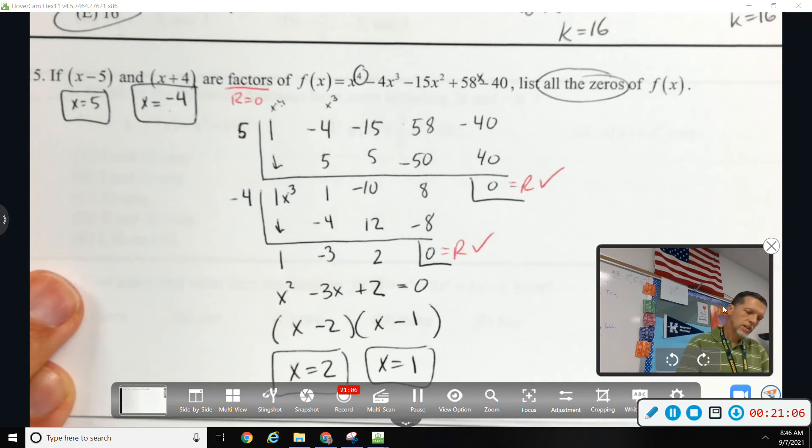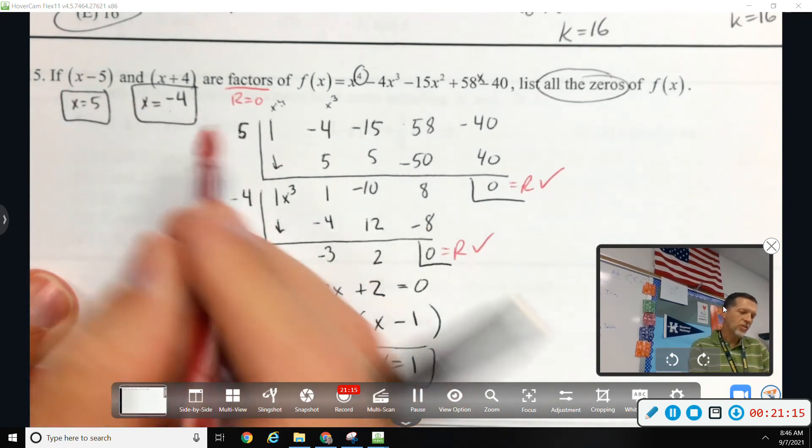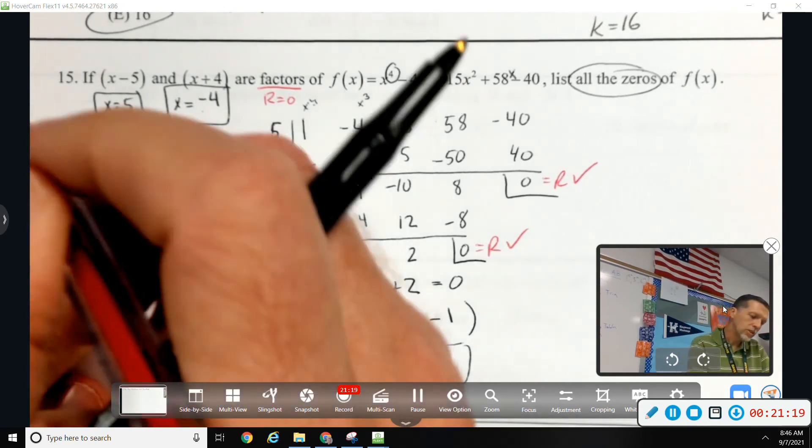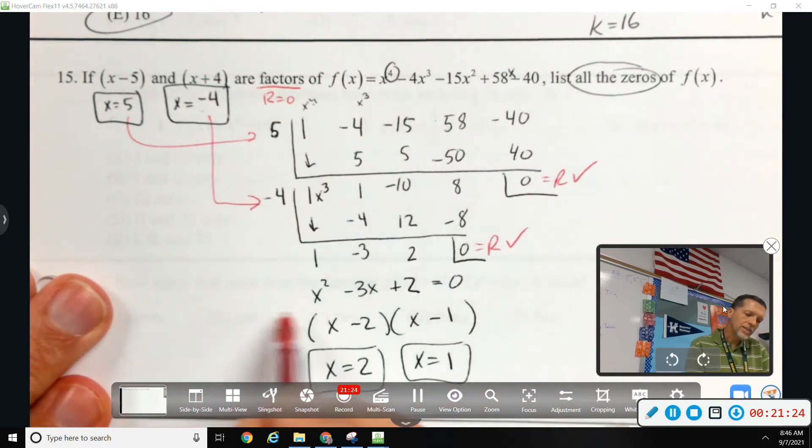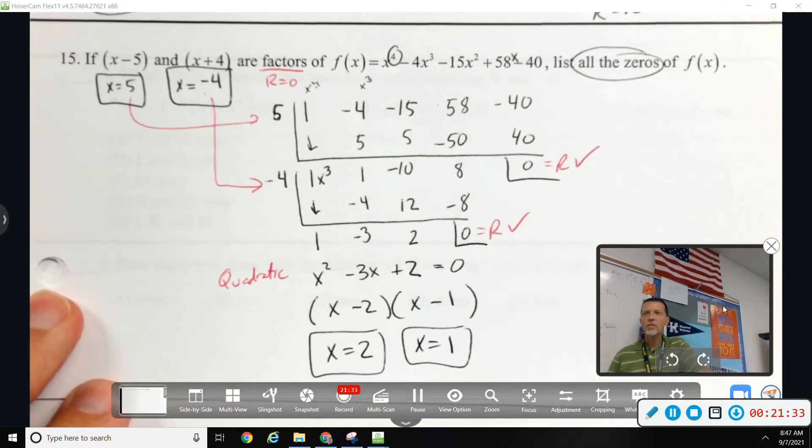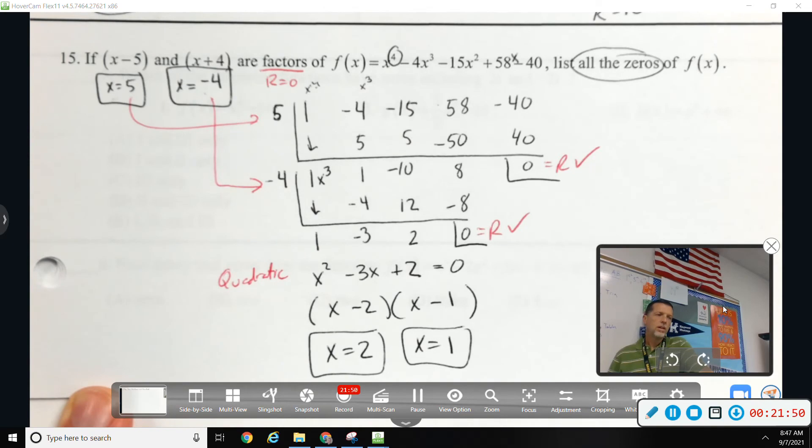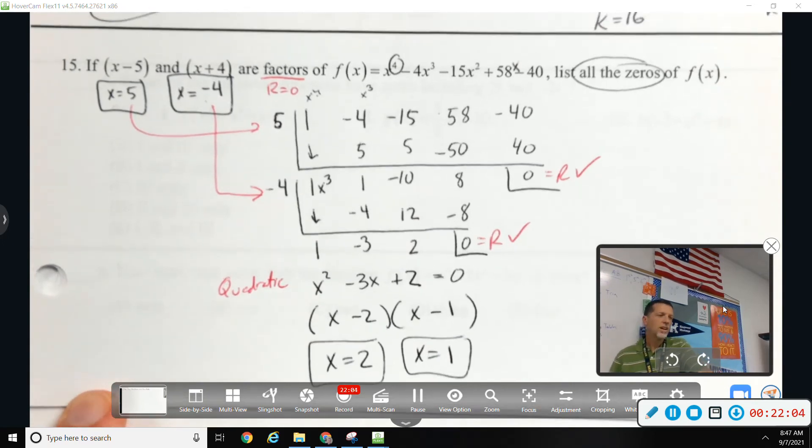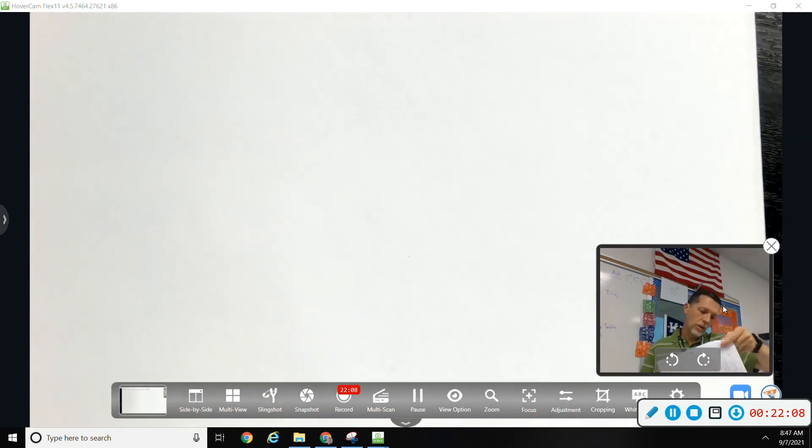So, list all the 0s. Well, it was x to the fourth, so there should be four 0s. They basically gave us two of them by giving us factors because factors and 0s are not exactly the same thing, but pretty close. We divided with those two factors. That got us down to a quadratic. And we can always solve a quadratic. This one was nice enough to factor, but if it didn't, we'd use the quadratic formula. Other questions? Because I have one that I want to work. If it didn't have to work it, we should definitely look at that one. Number 12.